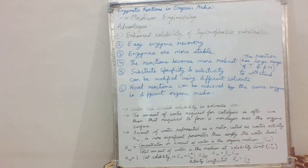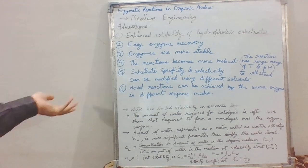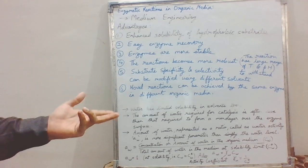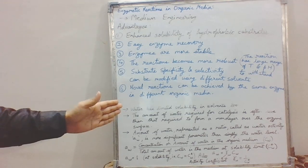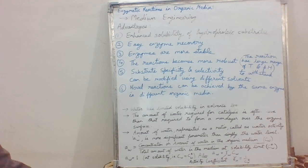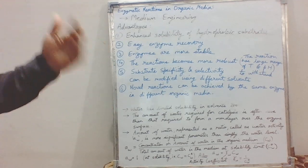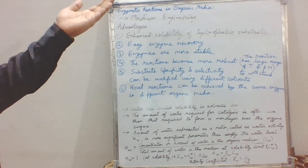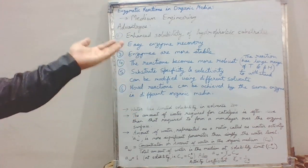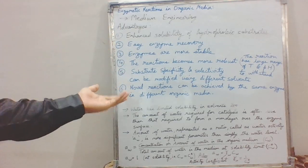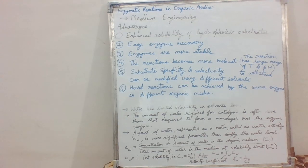These are the important facts that must be considered before performing reactions in organic media. Care must be taken that purification and lyophilization of the enzyme are done under optimum conditions for enzyme activity. With a minimum amount of water, high purity of product can be obtained, and downstream processing becomes easier because organic media have low boiling points — allowing us to distill out the product at lower temperatures without destroying its properties.